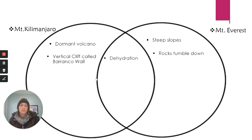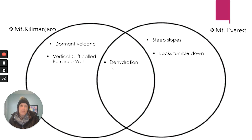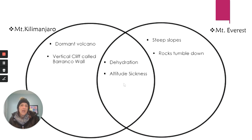Now let's look at similarities. Dehydration could occur — even though it was only mentioned in the Kilimanjaro article, when you climb to higher altitudes you're sweating more and losing water vapor, so dehydration could occur on any mountain. Altitude sickness: it was touched on lightly for Everest but explained in depth for Kilimanjaro. Since altitude sickness occurs above 8,000 feet, it applies to any mountain that high above sea level. You can continue placing the rest of your highlighted notes — does each danger belong to just Kilimanjaro, just Everest, or to both?